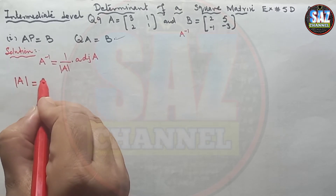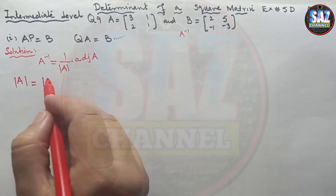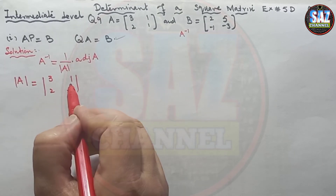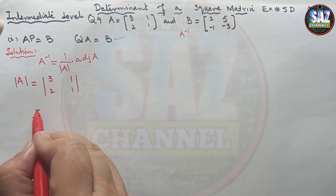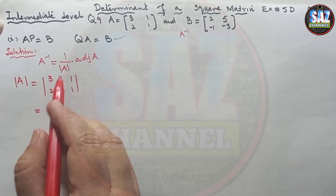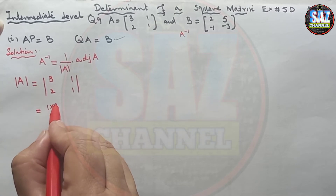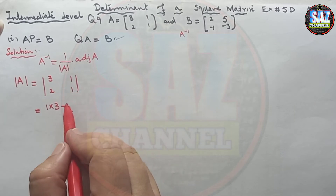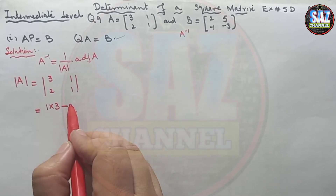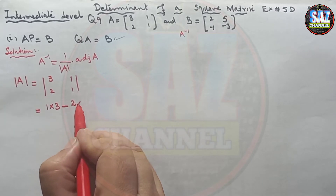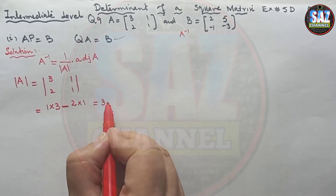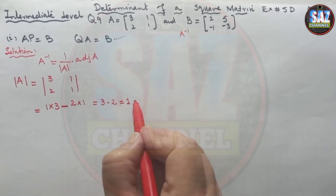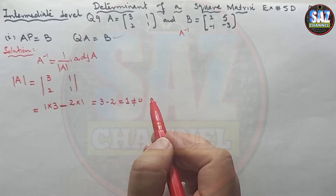The determinant of A, written with entries 3, 2, 1, 1, is calculated by multiplying the diagonal entries: 1 times 3, then subtracting the product of the other diagonal: 2 times 1. This gives 3 minus 2, which equals 1. Since det(A) = 1, which is not equal to zero, we can find the inverse.